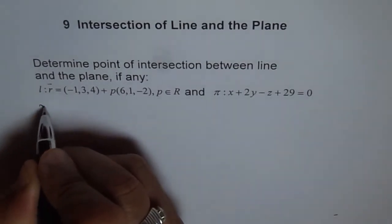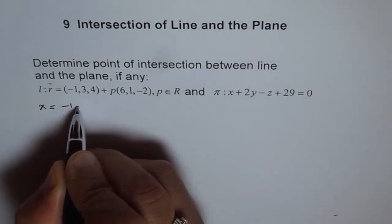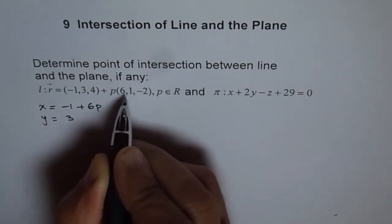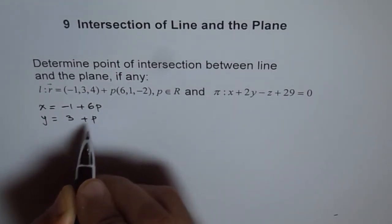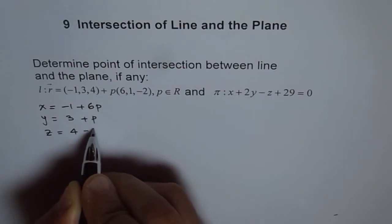So we'll do that. So we say x equals -1 + 6p, and y equals 3 + p, and z equals 4 - 2p.